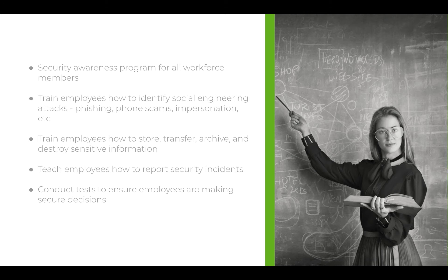Train your employees how to spot social engineering attacks: phishing, phone scams, impersonation, etc. Organizations that do regular training are harder to social engineer than organizations that do only annual training — we've found this consistently in our social engineering engagements. Employees need to be able to identify these attacks and know who to report them to. Train them how to store, transfer, archive, and destroy sensitive information. Make sure they understand they're not going to get in trouble for reporting an incident — we want them to report it. Conduct testing: phishing simulations, etc., to ensure employees are actually making secure decisions and understanding the material.